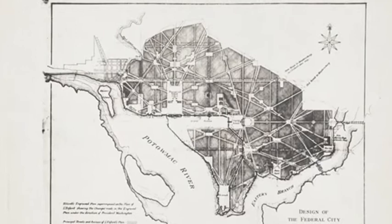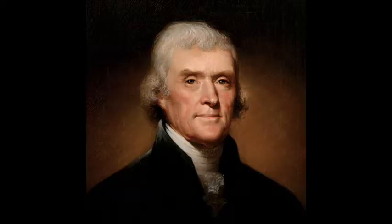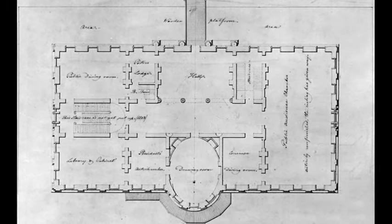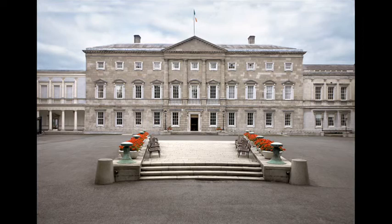The White House was built as part of the development of the Federal City, a national capital founded under the terms of the 1790 Residence Act. A competition, organised by Thomas Jefferson, led to the White House being built according to a design by Irish-born James Hoban, during which time Philadelphia in Pennsylvania served as the temporary capital.